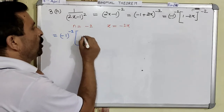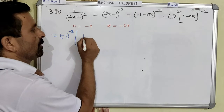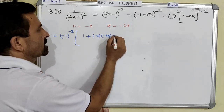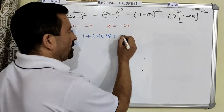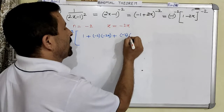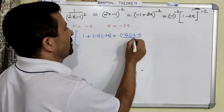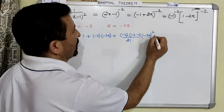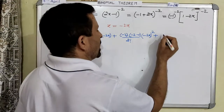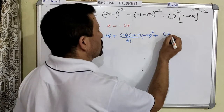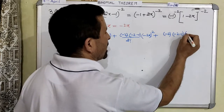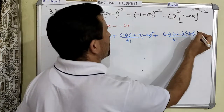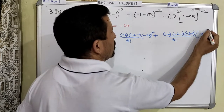Plus n(n-1) — n means minus 2, n minus 1 — divided by factorial 2, into x squared that is negative 2x squared. Plus n(n-1)(n-2): n means minus 2, n minus 1, n minus 2 — divided by factorial 3, into x cubed so this is minus 2x cubed. And then this way it will continue.